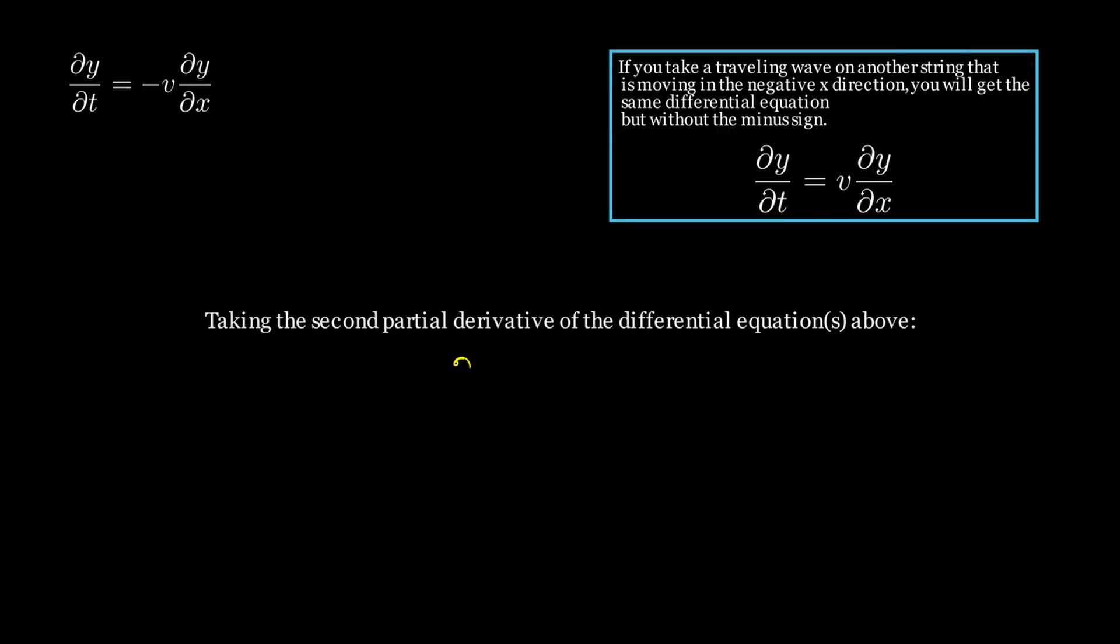Now if we take the second partial derivative of the wave equation above, you will see that the wave equation that we had previously seen is exactly what we get. Here again, v is the velocity of the phase and not the particles moving transversely.